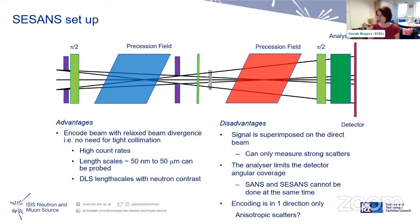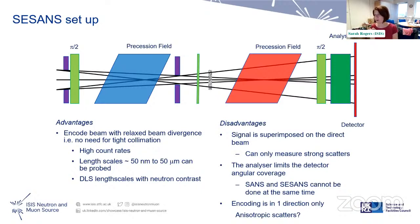The encoding is currently only in one direction. Having a 2D image allows you to see if there's anything isotropic, but at the minute we can only look at samples that are uniform in all directions — anisotropic ones.